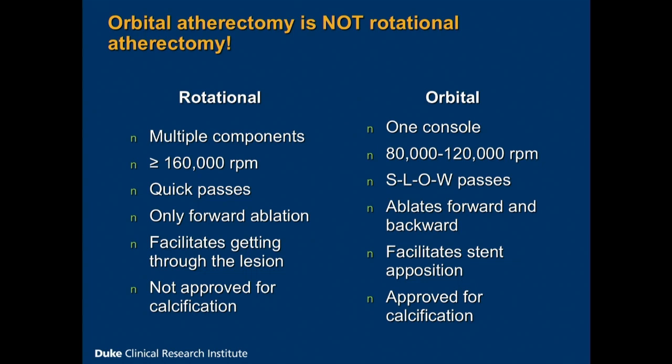It does ablate forward and backward. It's six French compatible. It's not a burr, but it's called a crown. The current philosophy for atherectomy is not about getting through the lesion — whether you're using rotational atherectomy or orbital atherectomy — it's really about modifying vessel compliance to get complete stent expansion. Even if you can get through the lesion, you may not be able to fully expand the stent. That's where you need to start thinking about atherectomy, and the OAS device is approved for coronary calcification.